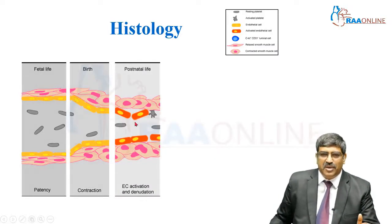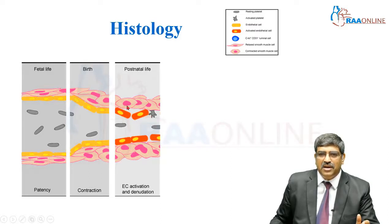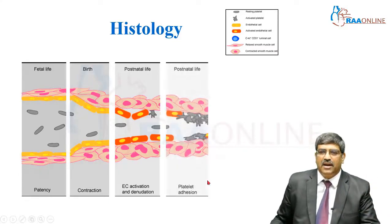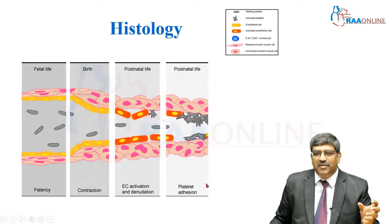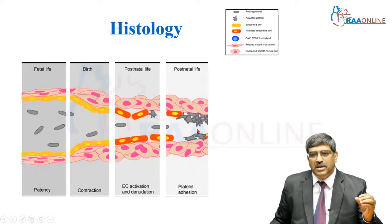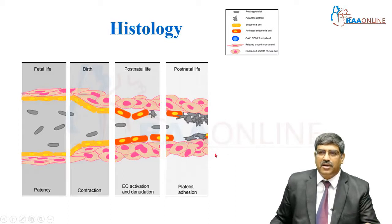With further activation, you can see the endothelial cells getting activated. The platelets, which were quiescent, get activated and smooth muscle changes occur. The smooth muscles are getting contracted, and with further platelet activation there is platelet addition and the lumen is getting obliterated.